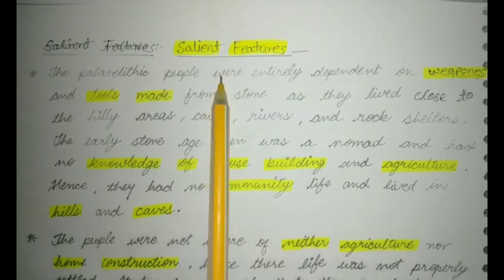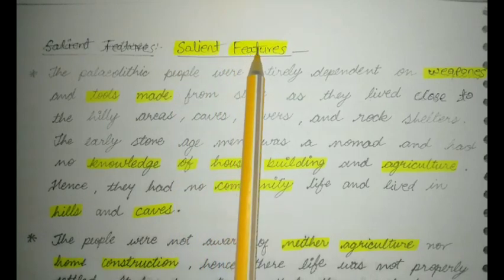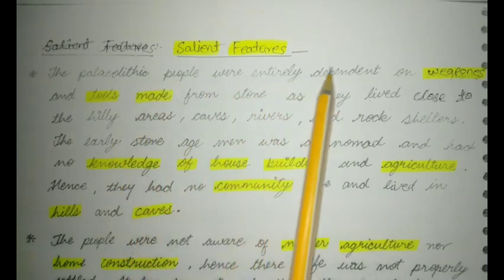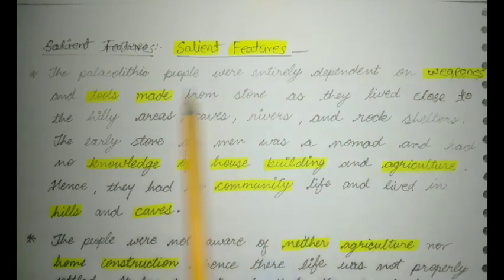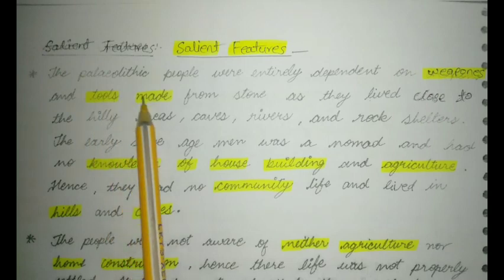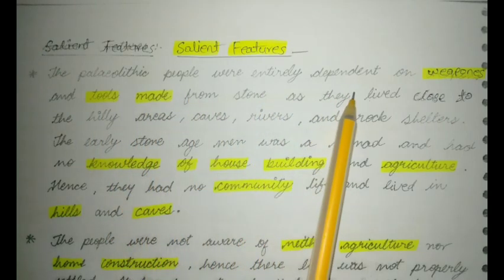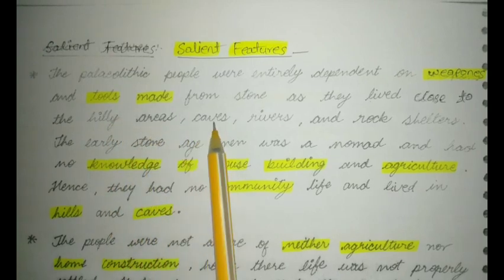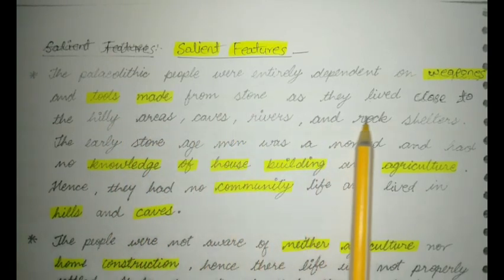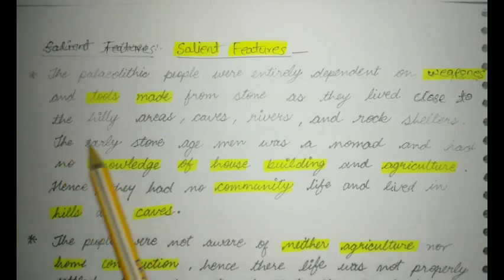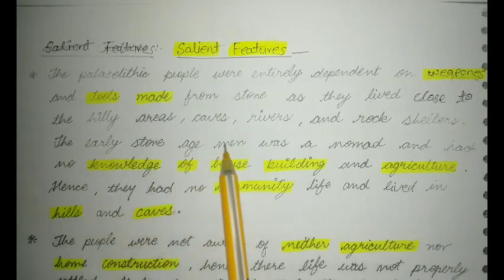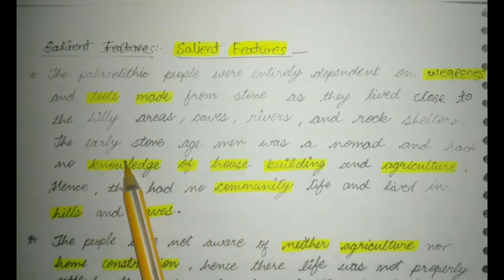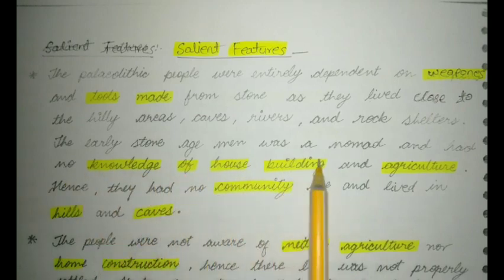Now we will talk about the salient features of Paleolithic. The Paleolithic people were entirely dependent on weapons and tools made from stone as they lived close to hilly areas, caves, rivers and rock shelters.